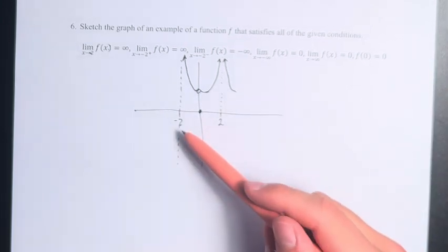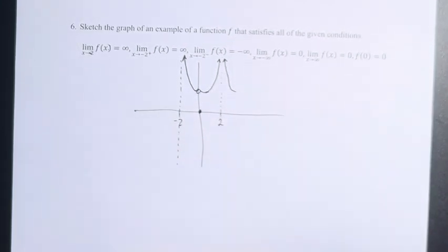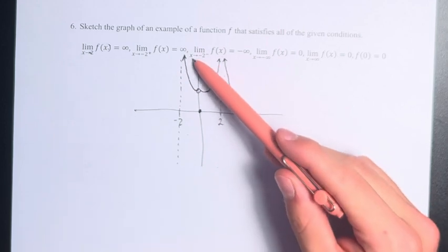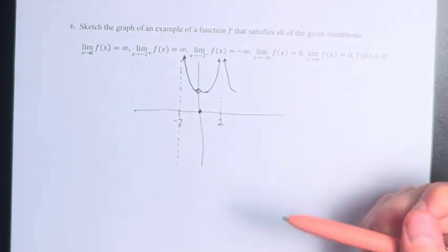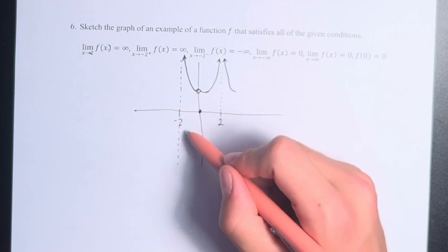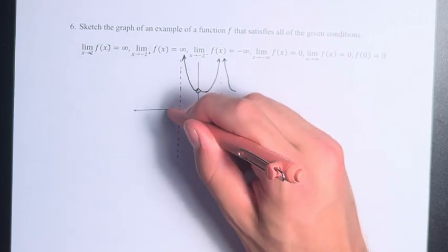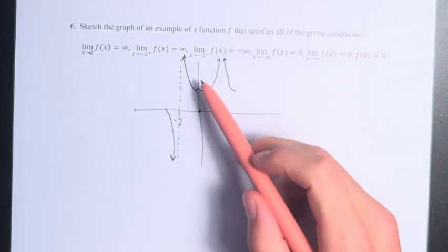On the other side of this x equals negative 2 vertical asymptote, we're told that the limit as x approaches negative 2 from the left equals negative infinity. That means as we're getting closer and closer to this line, now from the other side, we're going off to negative infinity as opposed to positive infinity.